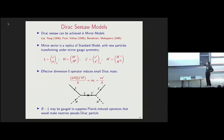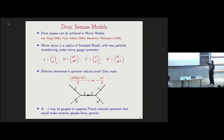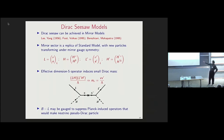I want to discuss one particular model — the mirror model, originally suggested by Lee and Yang in 1956 for understanding parity violation. This has been developed for neutrinos by several groups with a large literature following. The basic idea is that there is a Standard Model sector where we live and a mirror sector which is a replica of the Standard Model. Every particle is duplicated there, and the gauge interactions are also duplicated. The mirror sector particles include a mirror neutrino prime.